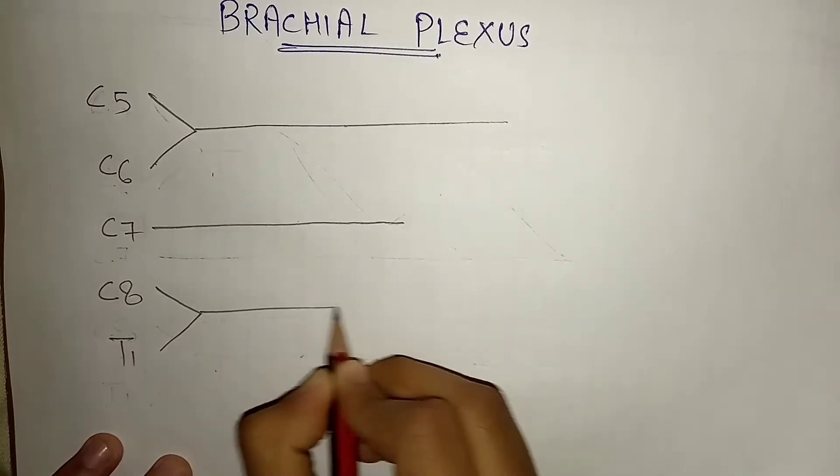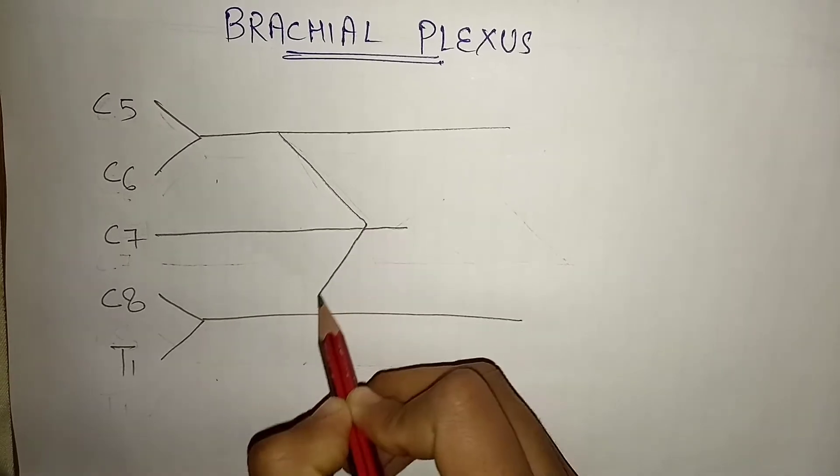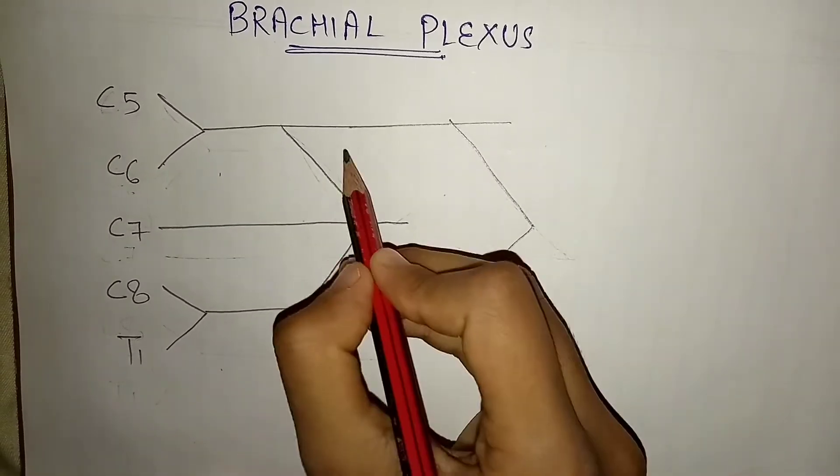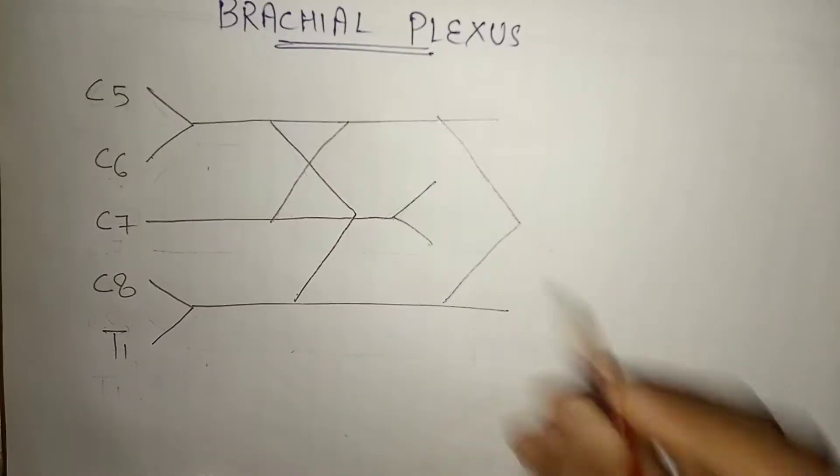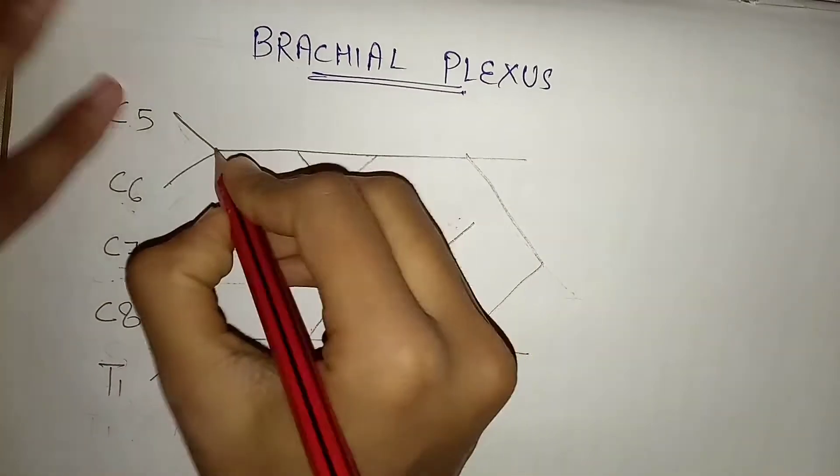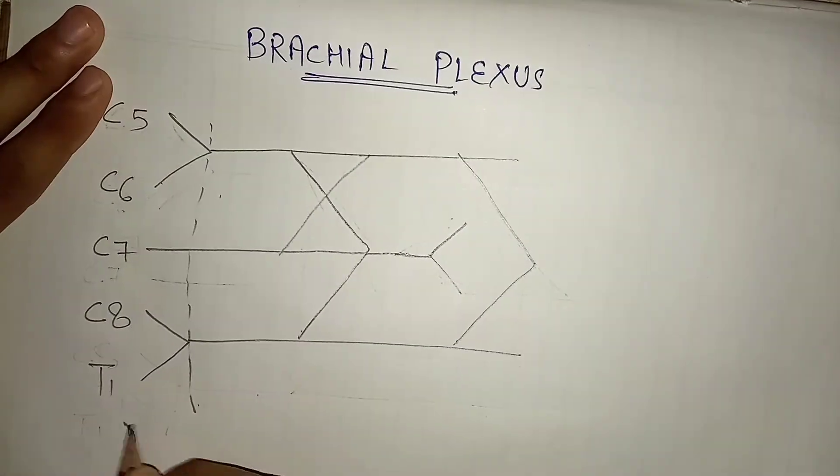For this you have to write root values from C5 to T1. Please see carefully, this is the very easiest way that you can draw brachial plexus. So the brachial plexus is divided into major five parts.